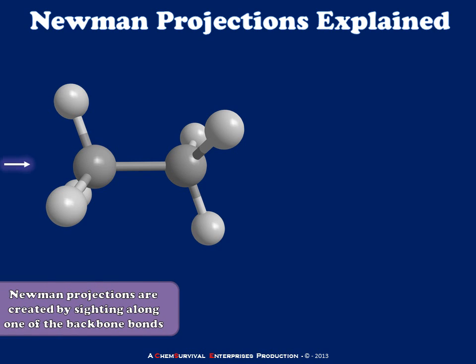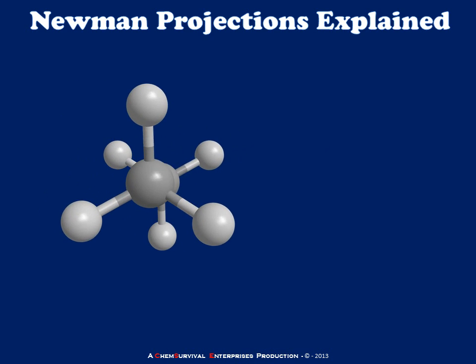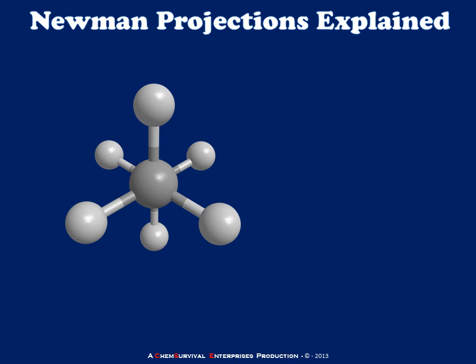To do this, we sight along one of the internal backbone bonds — in this case the carbon-carbon bond of ethane. In order to look along this bond, naturally I'll have to rotate this molecule. Rotating the molecule in such a way that we're sighting along the carbon-carbon bond makes the dihedral angles between all the C-H bonds within the molecule very apparent.